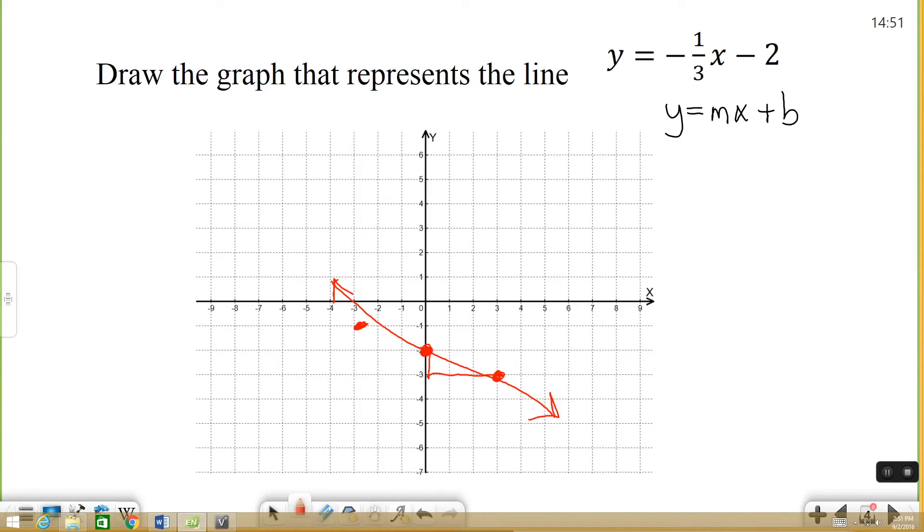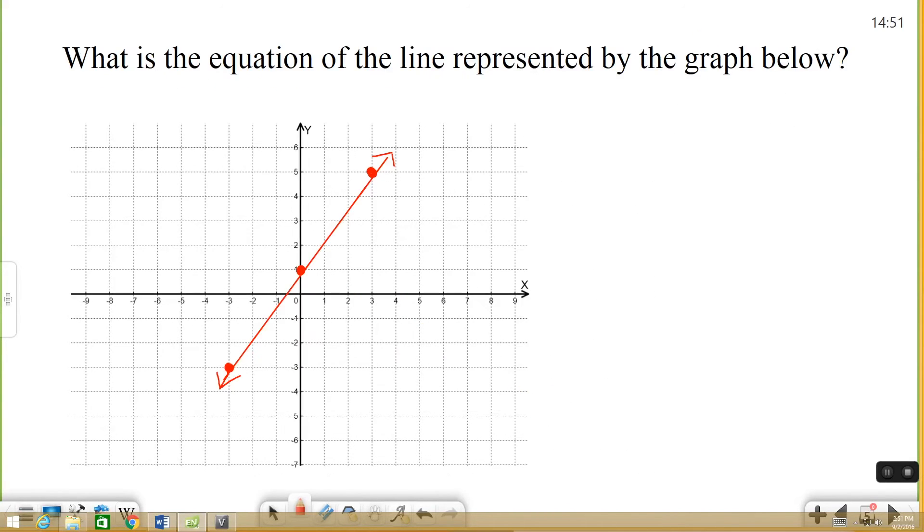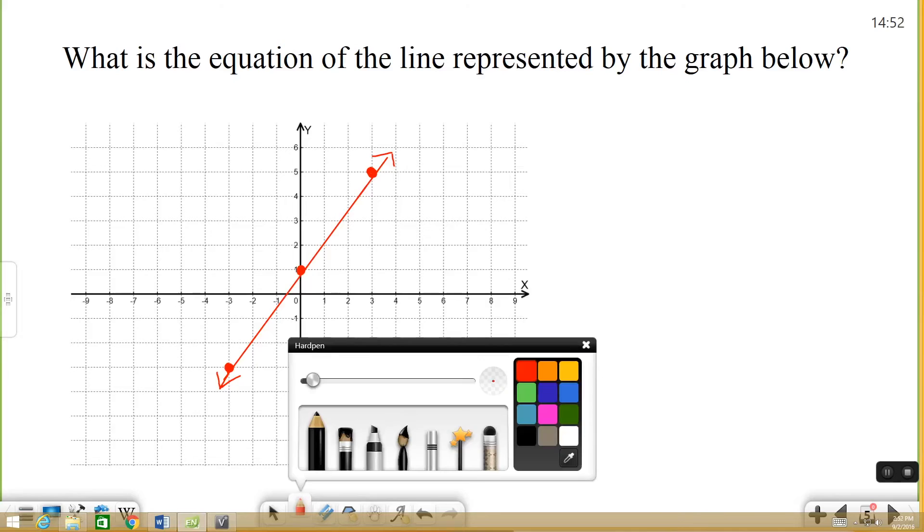So let's take a look at another example. This time, they've given us a graph already drawn. It says, what is the equation of the line represented by the graph below? So this time, you have to work in the backwards direction. So I'm going to change colors real quick.